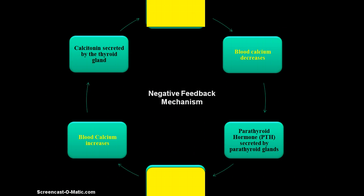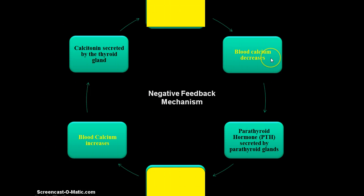Blood calcium is controlled by a negative feedback mechanism, which we reviewed earlier in the semester. We're always trying to bring whatever we're controlling — in this case blood calcium — back to set point. So let's start with when blood calcium level decreases, even if it's decreasing within a normal range, it's still moving away from set point.